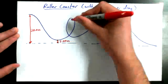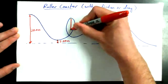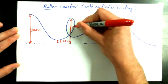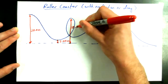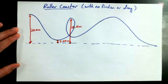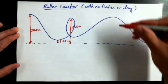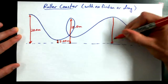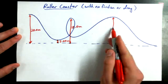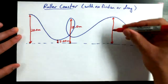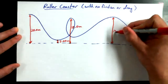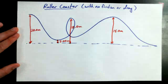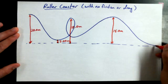At the top of this loop, when you're upside down, we're going to be at a height of 13 meters. And when we get over to this hill — which is definitely shorter than the starting hill — it's going to be 15.0 meters.